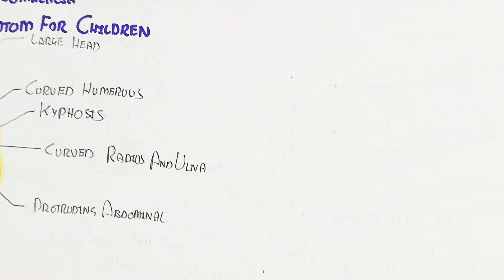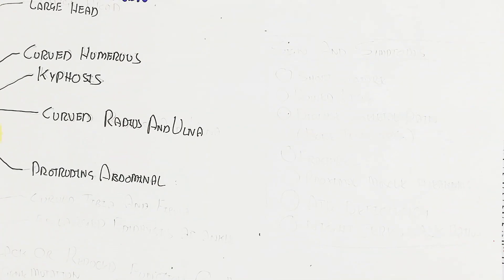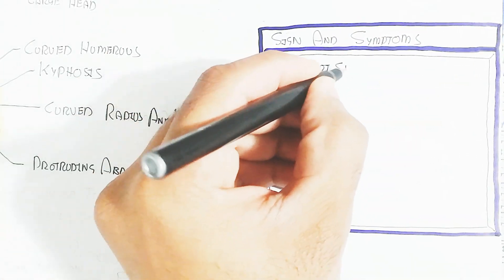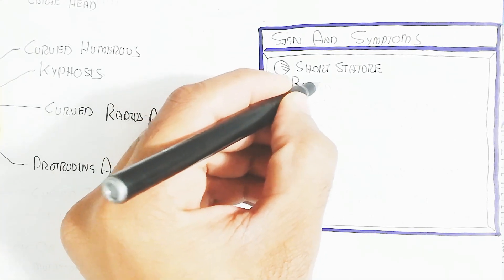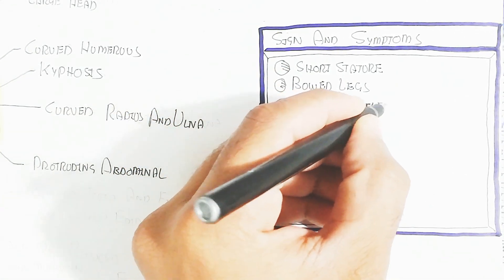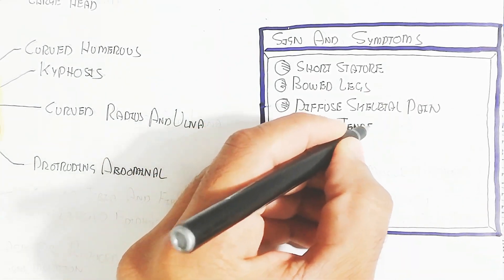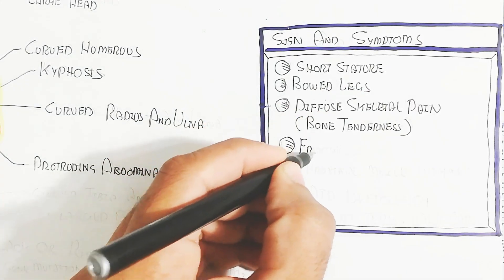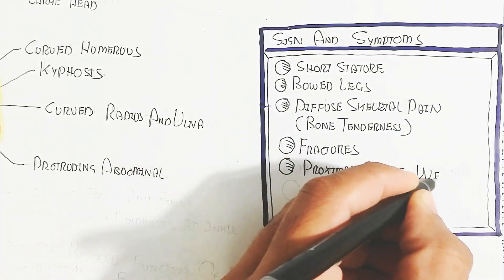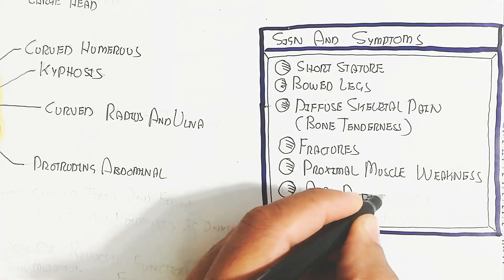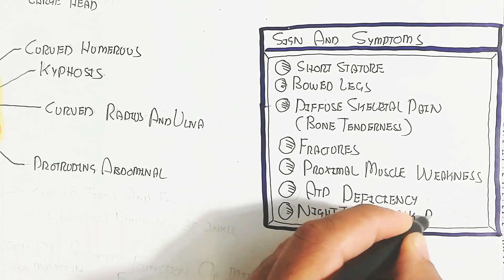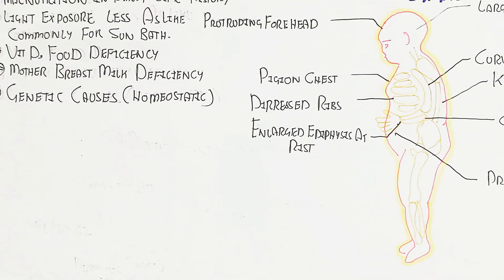Epiphysis we will discuss also. Let's begin to understand further signs and symptoms. Short stature and bowed legs, and walking can be a problem due to the bowed leg, diffuse skeletal pain and bone tenderness and fractures easily. Proximal muscle weakness and ATP deficiency will lead to cramps, night jerks, and calf pain.